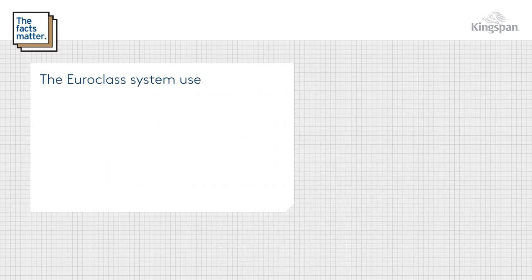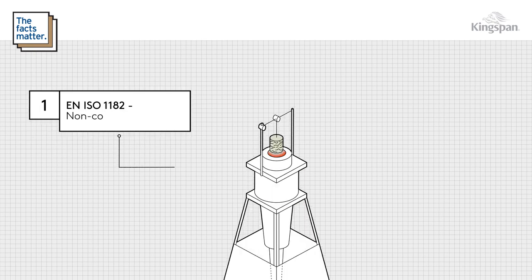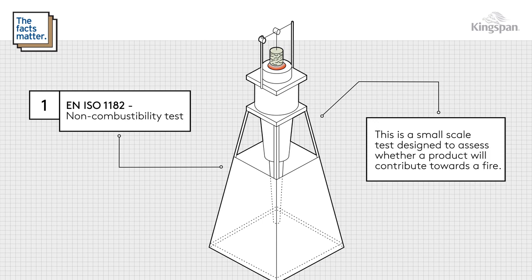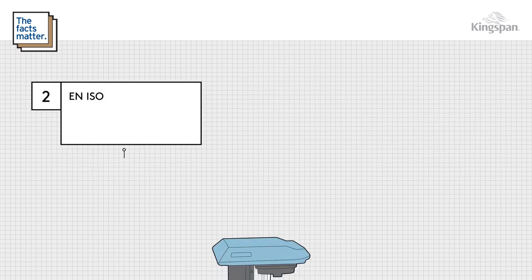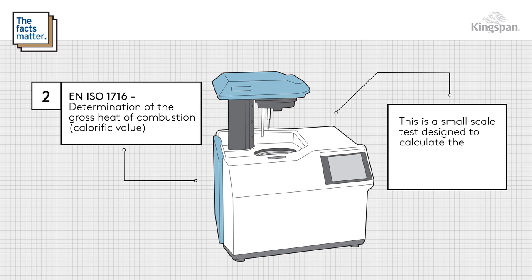The Euroclass system uses four tests. EN ISO 1182, the non-combustibility test — a small scale test designed to assess whether a product will contribute towards a fire. EN ISO 1716, determination of the gross heat of combustion, calorific value — a small scale test designed to calculate the total heat release of a specimen when burned completely.